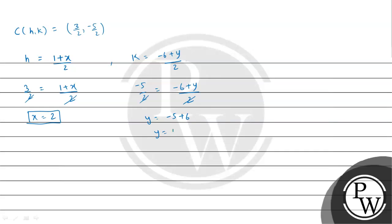Therefore, the other end of the diameter is (2, 1). This is the final answer. I hope you understood the solution. Best of luck, thank you.